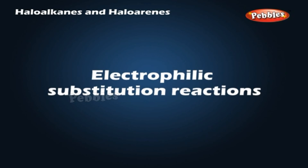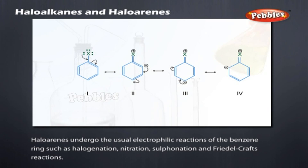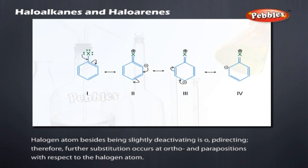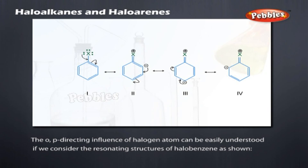Electrophilic substitution reactions: haloarenes undergo the usual electrophilic reactions of the benzene ring, such as halogenation, nitration, sulfonation, and Friedel-Crafts reactions. The halogen atom, besides being slightly deactivating, is ortho-para directing. Therefore, further substitution occurs at ortho and para positions with respect to the halogen atom, as understood from the resonating structures of halobenzene.